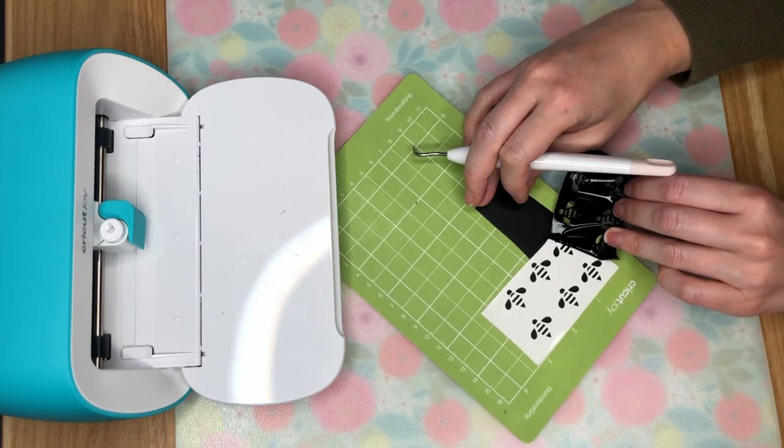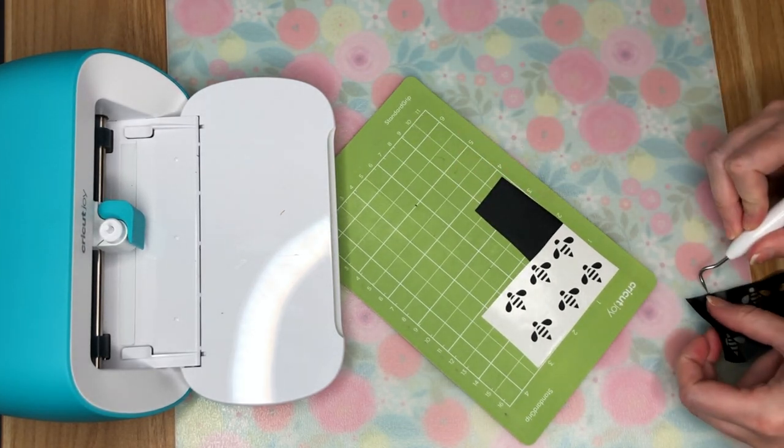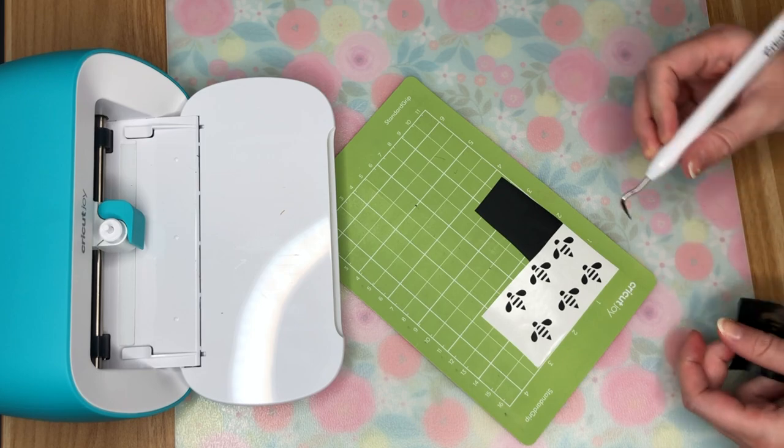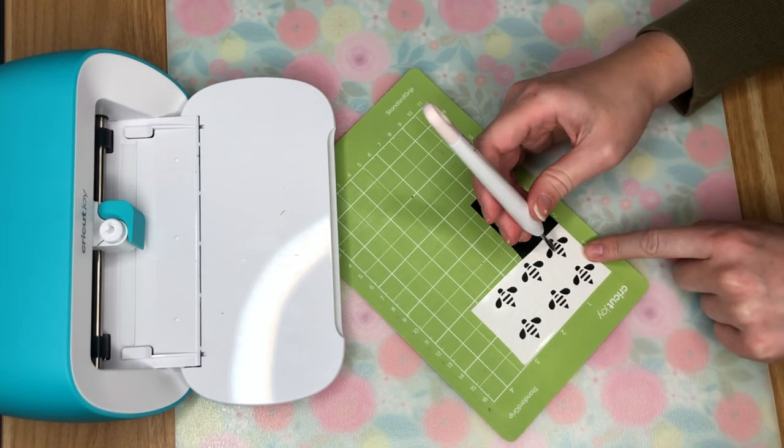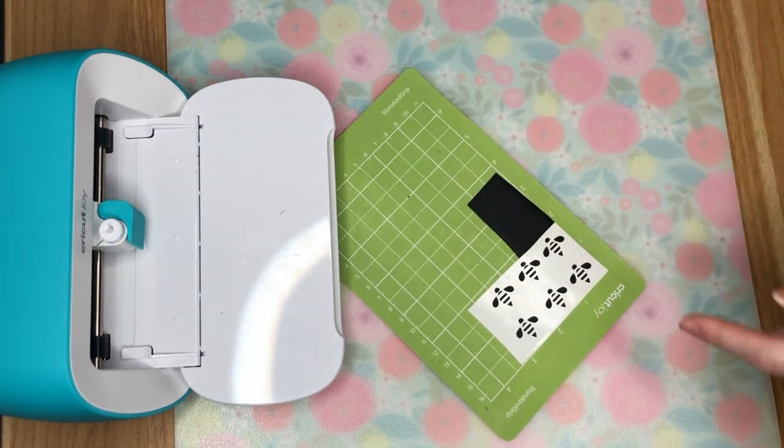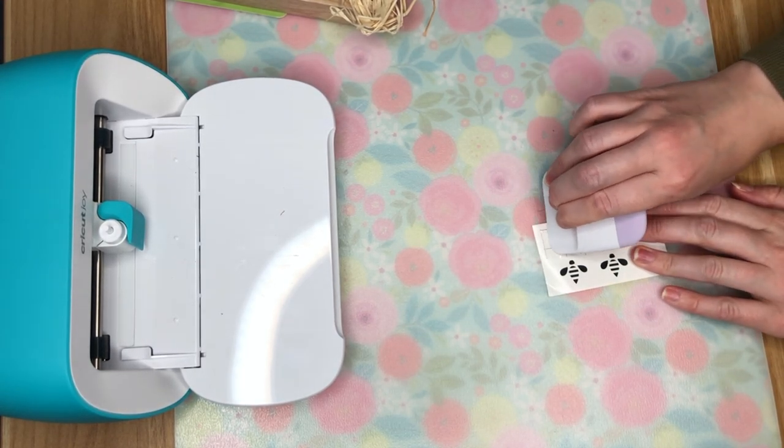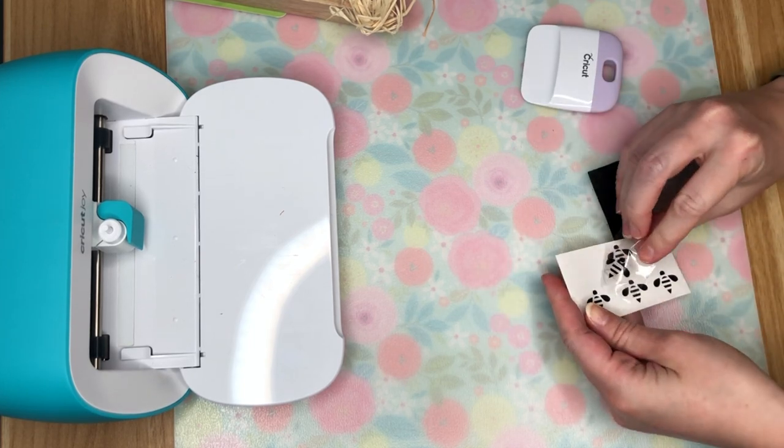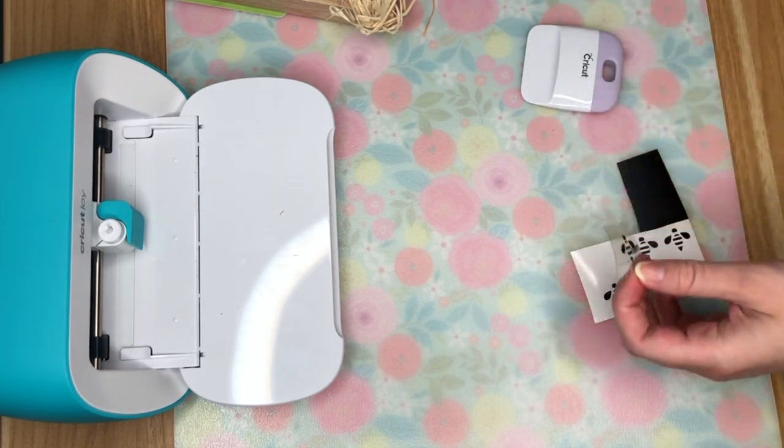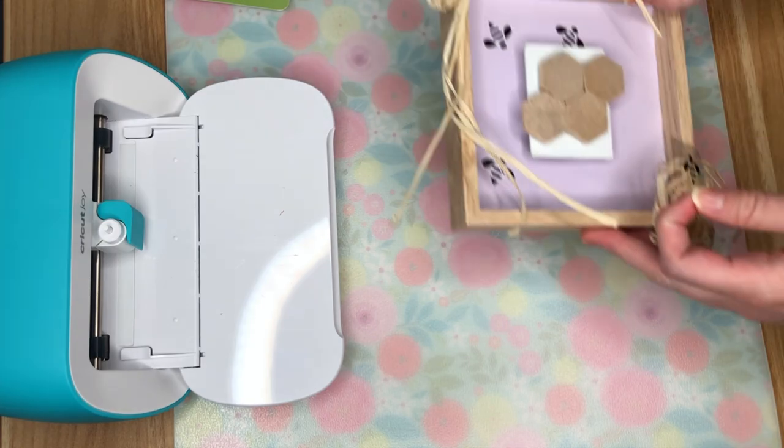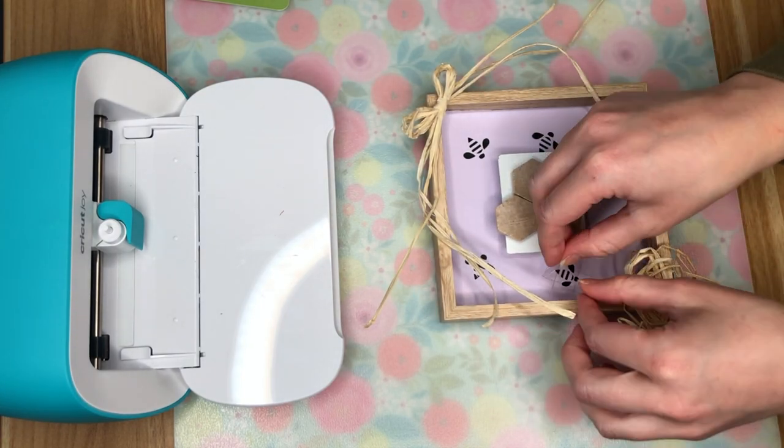Then to really make this bee themed I brought out my little Cricut Joy. I absolutely love using my Cricut Joy when I just want to do a really fast vinyl project and I don't want to bring out my whole Explore or Maker machine and the Cricut Joy works so amazing for this. And I just found these little bees on Cricut Access and I am going to be putting these all over my paper.